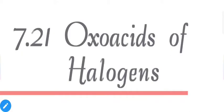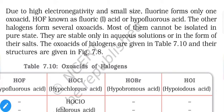Today we are going to discuss oxo acids of halogens. Due to the high electronegativity and small size of fluorine, it forms only one oxo acid, HOF, known as fluoric one acid or hypofluorous acid. According to the name, fluorine would be in a positive oxidation state, but since it is the most electronegative element, this is not actually possible.